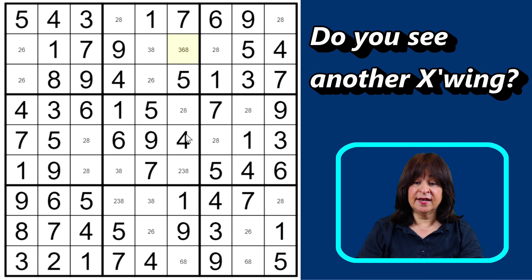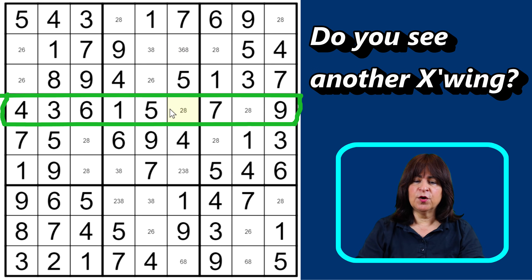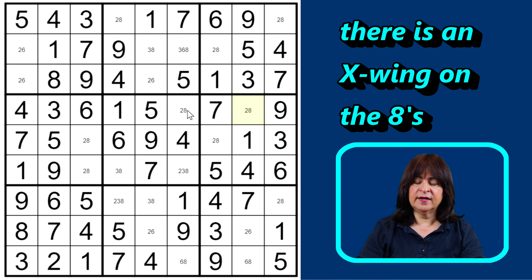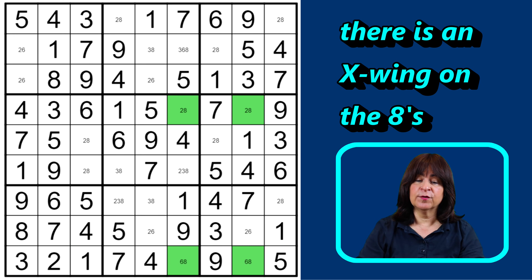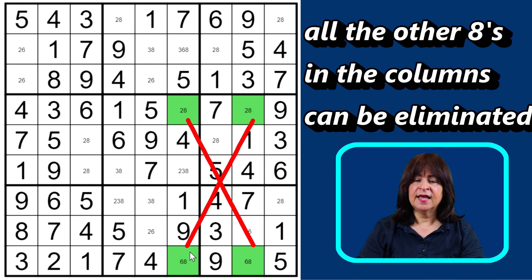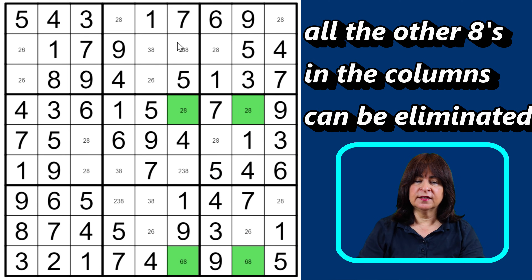And now I see another X-wing. Here in this row, we have an eight here and here. And in this row, we have an eight here and here. So that forms an X-wing on the eights. And now all the other eights in those columns can be eliminated. So I can eliminate this eight and this eight.